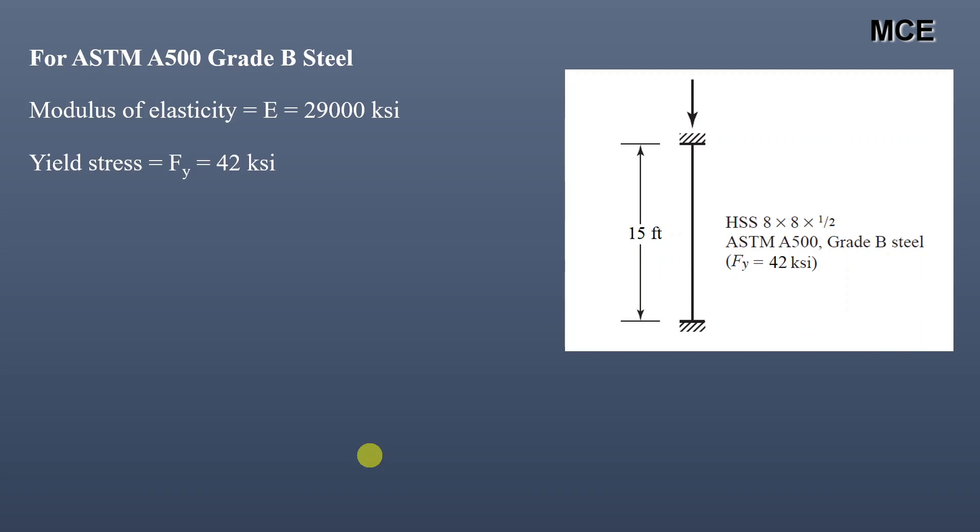Euler's stress is given as π² times E divided by the square of the slenderness ratio. Putting values of E and the slenderness ratio, we get the value of Euler's stress equal to 193.2 ksi.